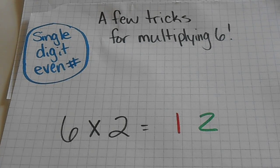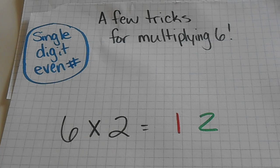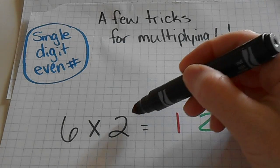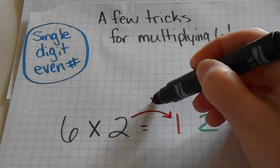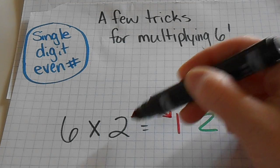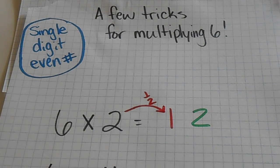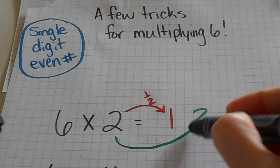As you can see here, I have six times two listed out, and the trick with this is that the tens place is actually just going to be half of whatever the number is that you're multiplying times, and then in the ones place you're going to have that same number.